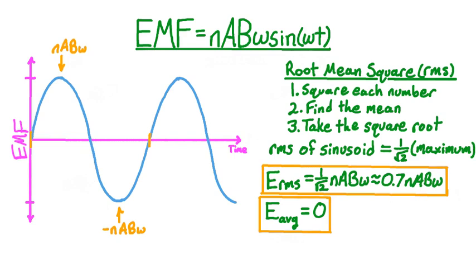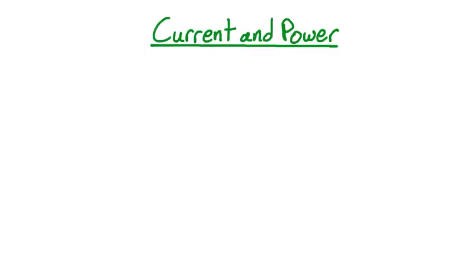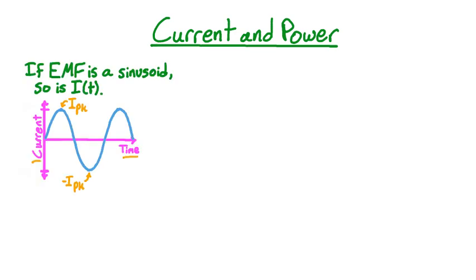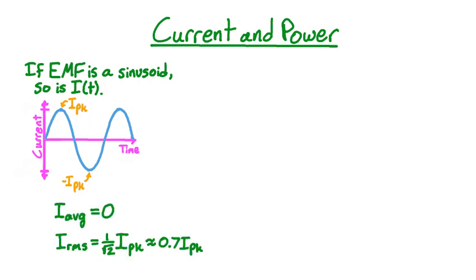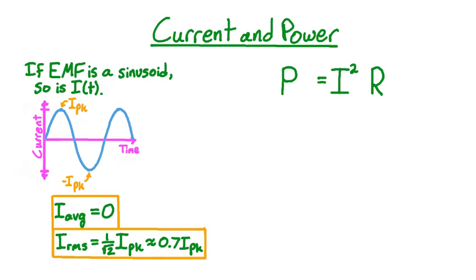Now we can apply similar principles to the current and power in alternating current circuits. In an alternating current circuit, if the EMF follows a sinusoid in time, so does the current. The graph of current versus time will be a sinusoid with a maximum size of I-peak that can be either positive or negative. Therefore, just like the EMF, the arithmetic mean of the current over a single cycle is zero, and the root mean square current is 1 over the square root of 2 times the maximum current, or approximately 0.7 times the maximum current.